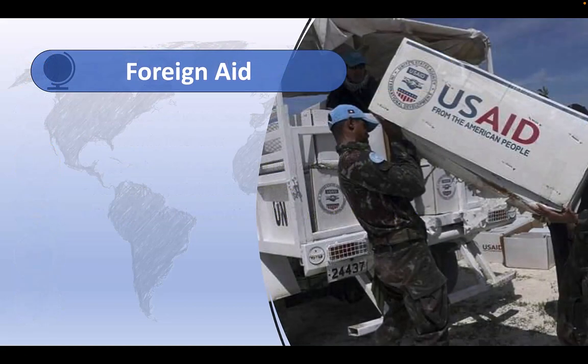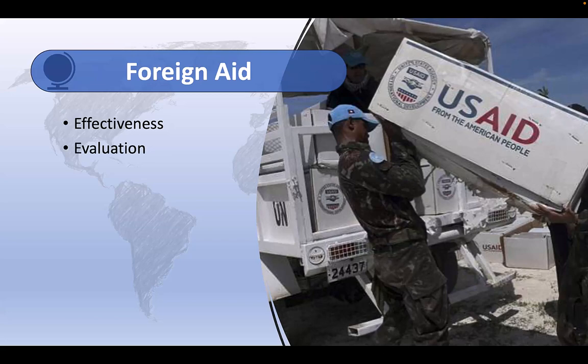But it's worth noting that foreign aid faces a number of challenges and criticisms. First, foreign aid is often criticized for being ineffective in achieving its goals. Foreign aid has shown mixed results. In some cases, aid has contributed to economic growth, poverty reduction, improved health and education outcomes, and infrastructure development. Aid has also played a vital role in responding to humanitarian crises, saving lives, and providing essential services. However, there have also been instances where aid has not achieved its intended objective or led to sustained development. Evaluating the effectiveness and impact of foreign aid can be a challenge. Determining whether aid has achieved its intended goals, measuring its impact on development outcomes, and attributing causality can be a complex task. Limited data, methodological challenges, and difficulties isolating aid's contribution from other factors makes assessing effectiveness a significant challenge.